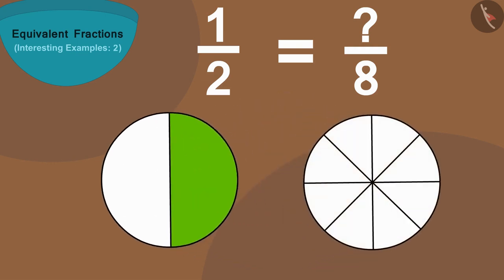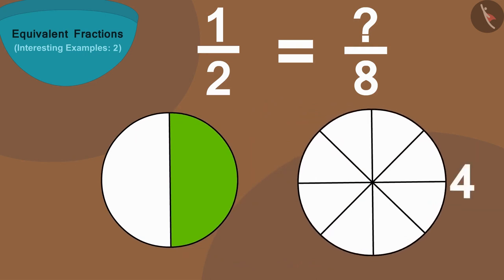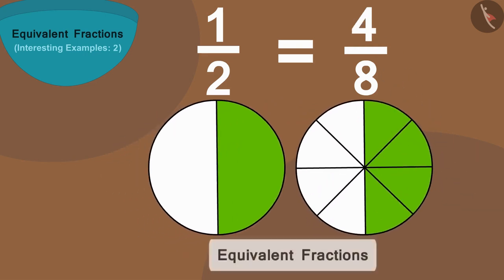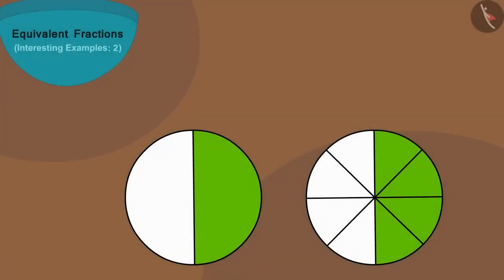Therefore, we will color in 4 parts of this circle. In this way, we have the numeral above our equivalent fraction as 4. In this way, half is equal to 4 by 8.